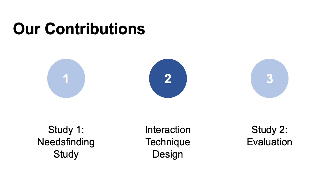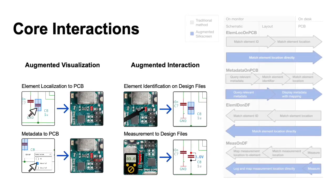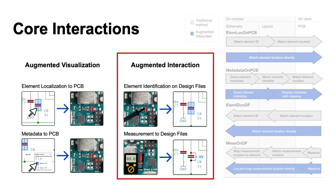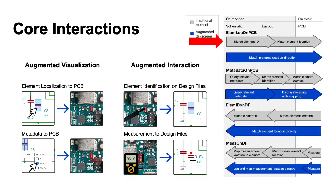We then took these design considerations and applied them towards formulating interaction techniques. From our discussions, we found a few fundamental tasks that we could target. The first set dealt with augmented visualization — taking information from the design files on the computer and bringing them to the PCB — such as element localization, where participants can select a component or other elements like nets and pins on the schematic or layout, and have that augmented directly on the board. The second set dealt with augmented interaction, where information from the board was taken and brought to the design file — for example, taking a measurement on the board and having that written back to the design file. As shown in the information flow diagram, what might have taken multiple steps with the traditional method can now be done more efficiently with augmented reality interactions.